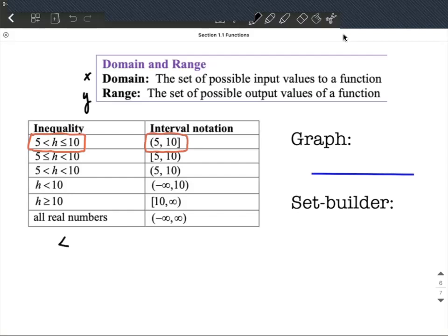A strict inequality like less than goes along with not including the endpoint, so it could be a parenthesis on that side, whereas less than or equal to corresponds with a square bracket, and that could be on either side as you can see in the next line down on our chart.